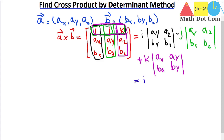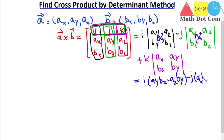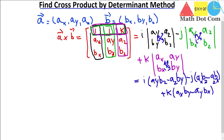In the next step we multiply the diagonal elements and put a negative sign between them. So the result is: i(ay·bz − az·by) − j(ax·bz − az·bx) + k(ax·by − ay·bx). This is how you can find the cross product of two vectors using the matrix determinant method.